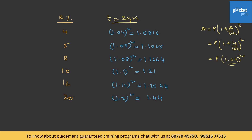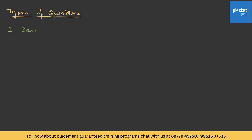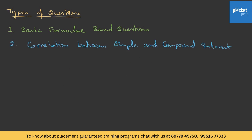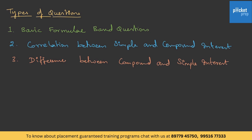Before we get into the questions, let me give you the different types of questions asked on this topic. The first type is basic formula-based questions — they give all the values, we just pick up the formula, substitute the values, and directly get the answer. The second type is correlation between simple and compound interest — they give simple interest and ask you to find the principal, which is then used in compound interest calculations. The third type asks you to calculate the difference between compound interest and simple interest.